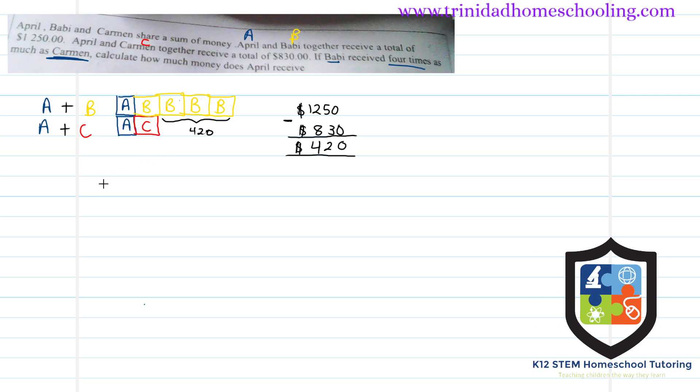Now this $420 represents three equal shares: one, two, three. One of these shares is equal to Carmen's share. So let's find Carmen's share: $420 divided by 3.